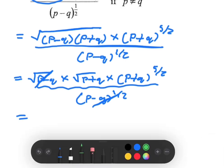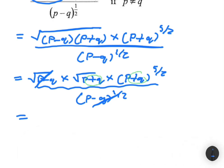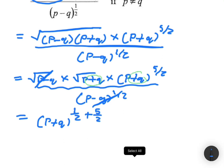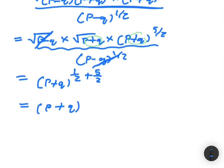After canceling, we're left with p plus q to the half multiplied by p plus q to the 5 divided by 2. Adding the exponents: 1 half plus 5 over 2 equals 3. So the final answer is p plus q to the power 3.